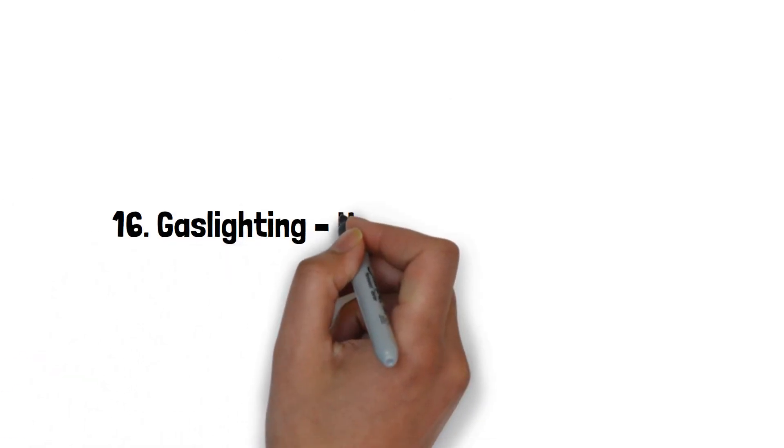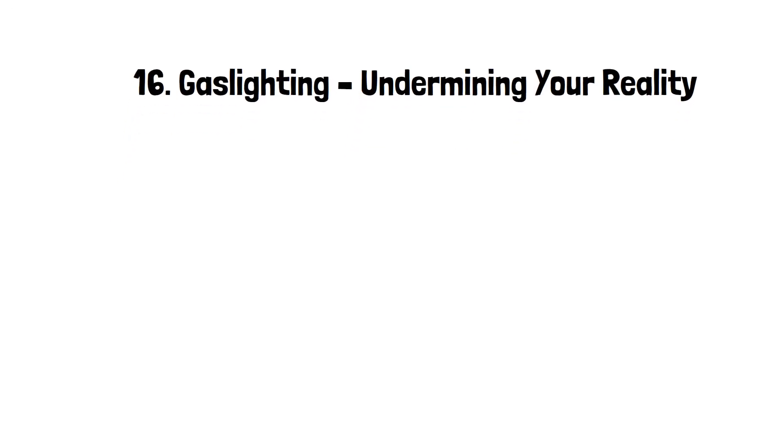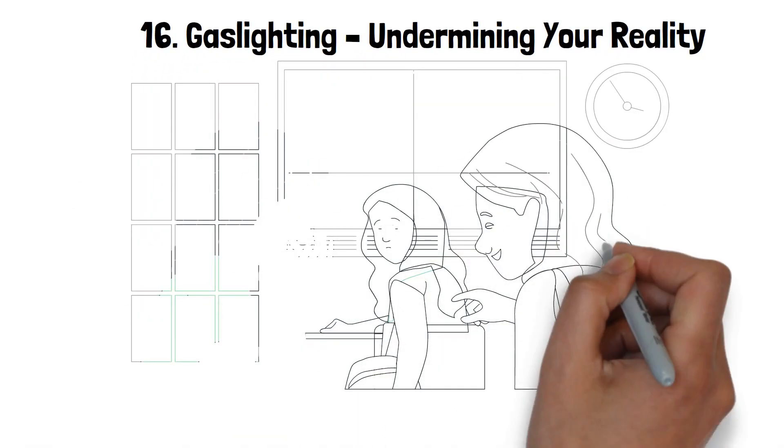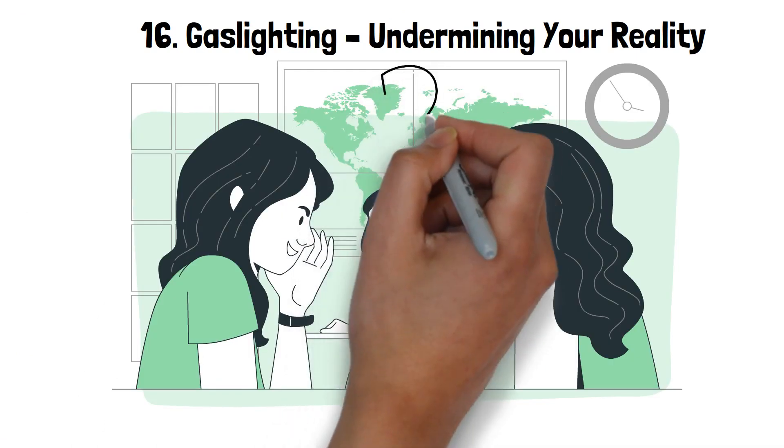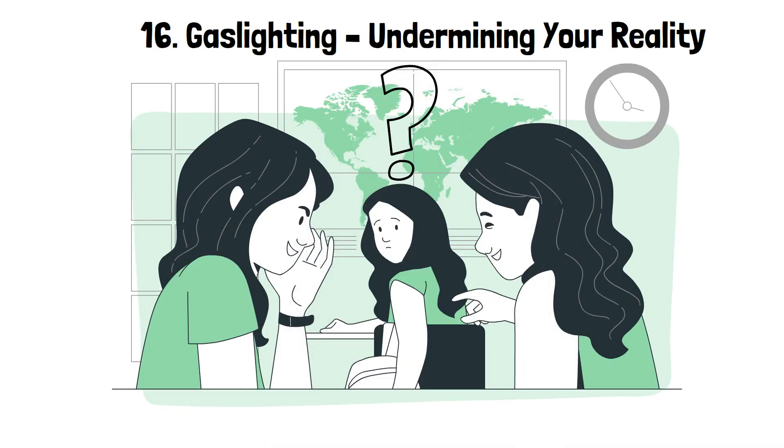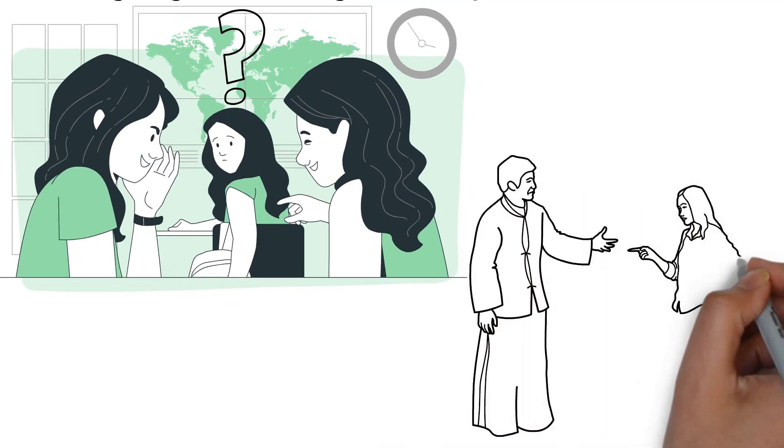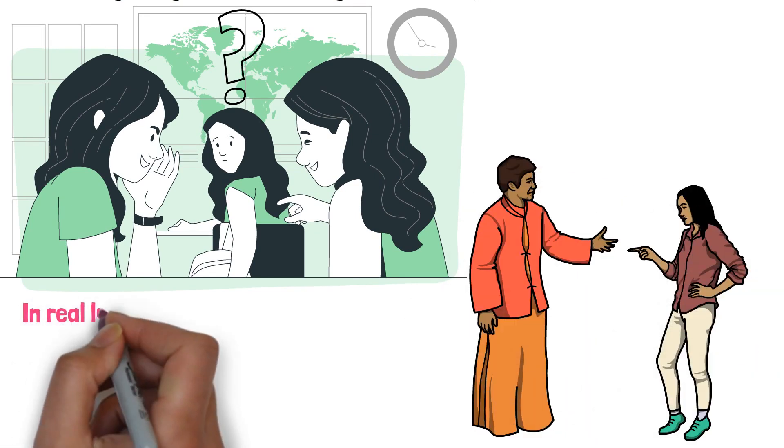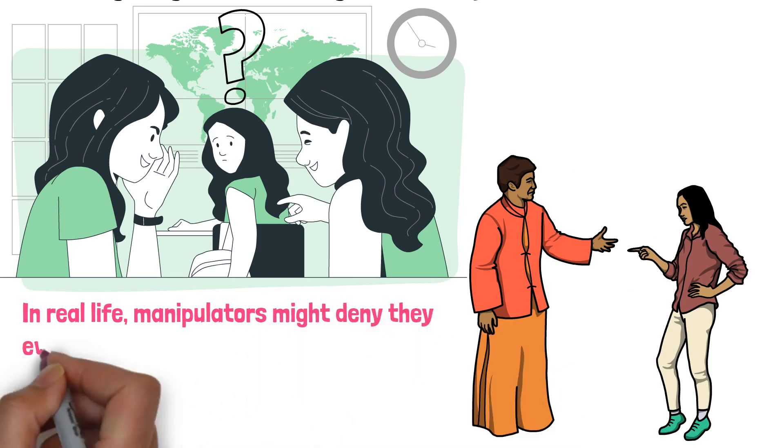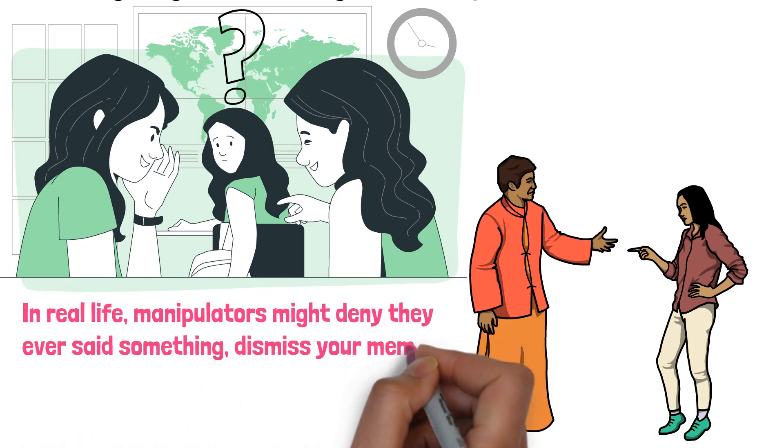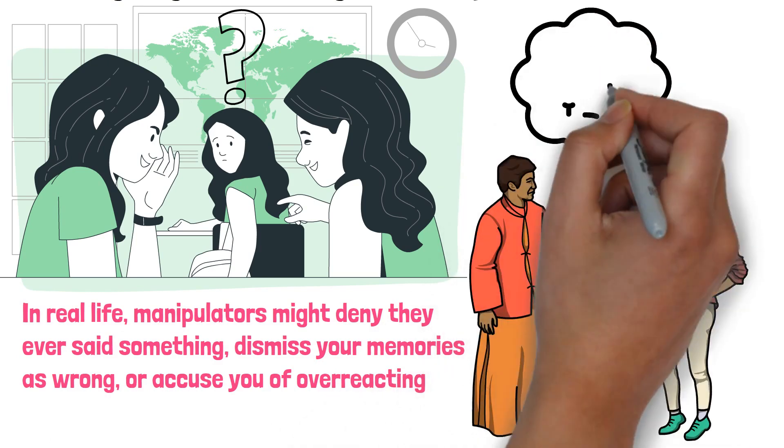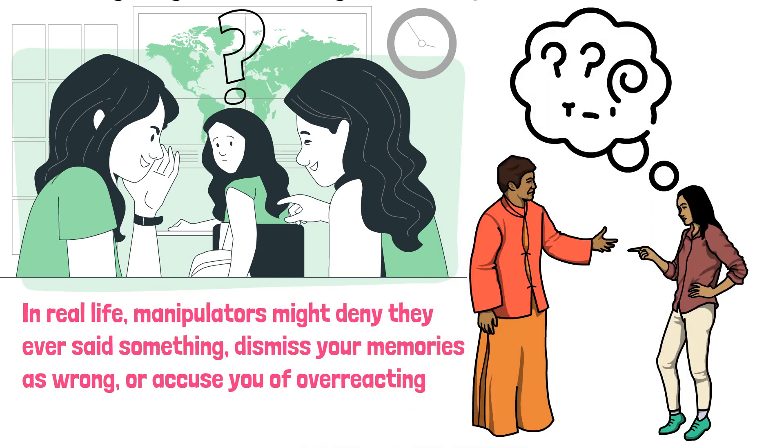16. Gaslighting. Undermining your reality. Gaslighting is a form of psychological manipulation that seeks to sow seeds of doubt in a targeted individual, making them question their own memory, perception, or reality. The term derives from the 1944 film Gaslight, where a husband tries to convince his wife she's losing her mind. In real life, manipulators might deny they ever said something, dismiss your memories as wrong, or accuse you of overreacting. They'll often reinforce this with affirmations like, you're too sensitive, or you're overthinking again.